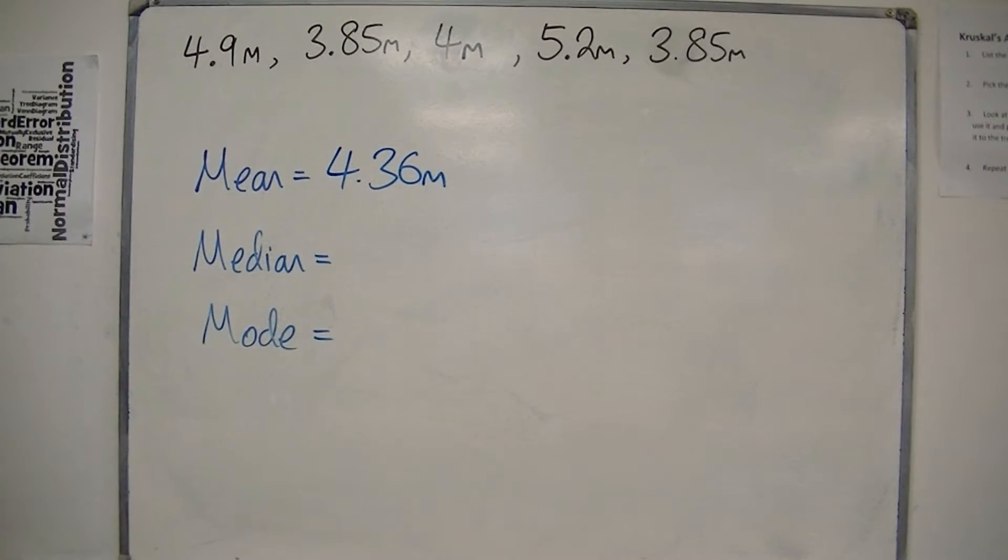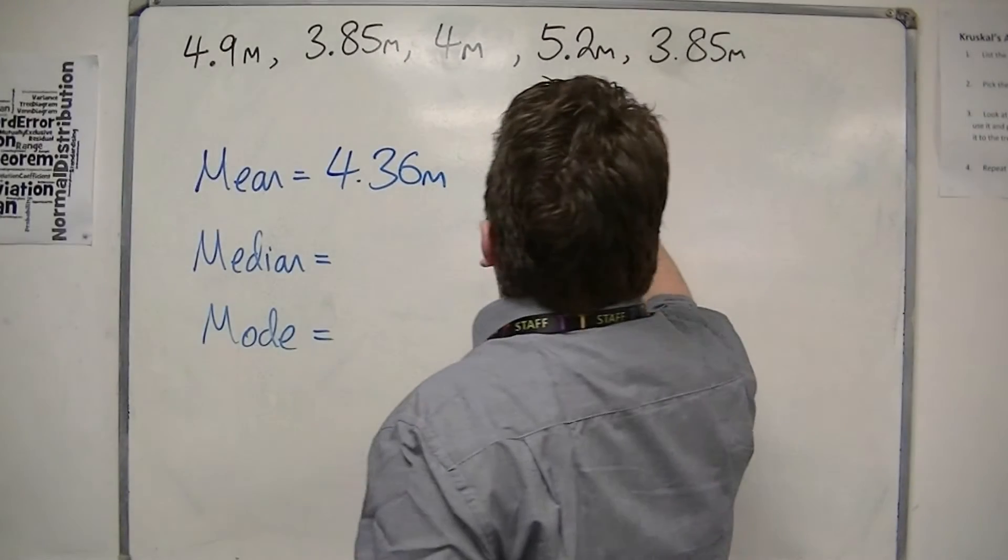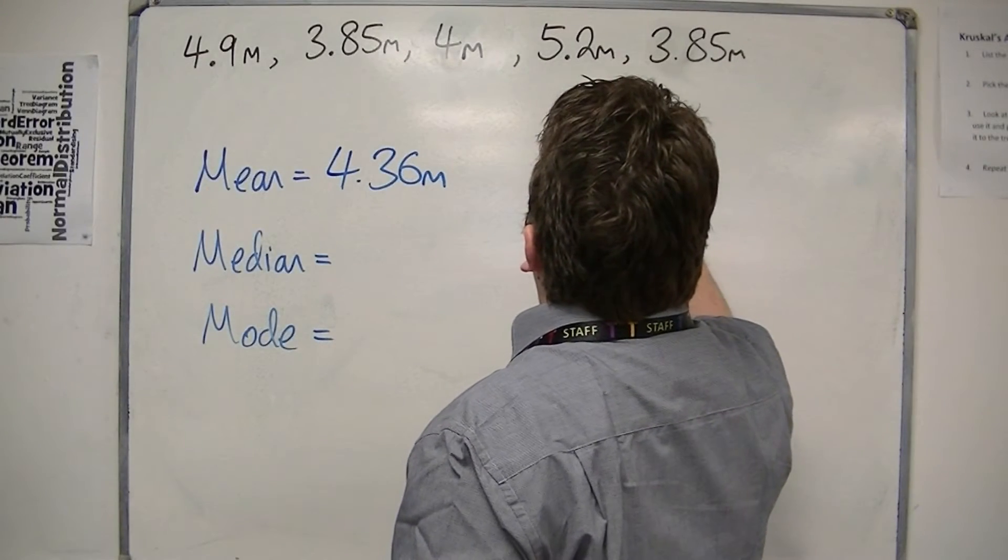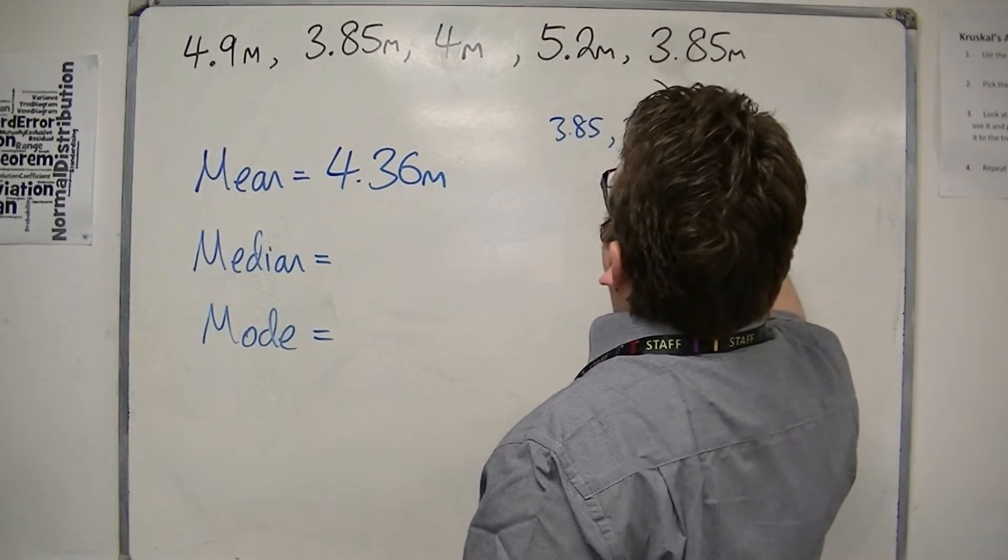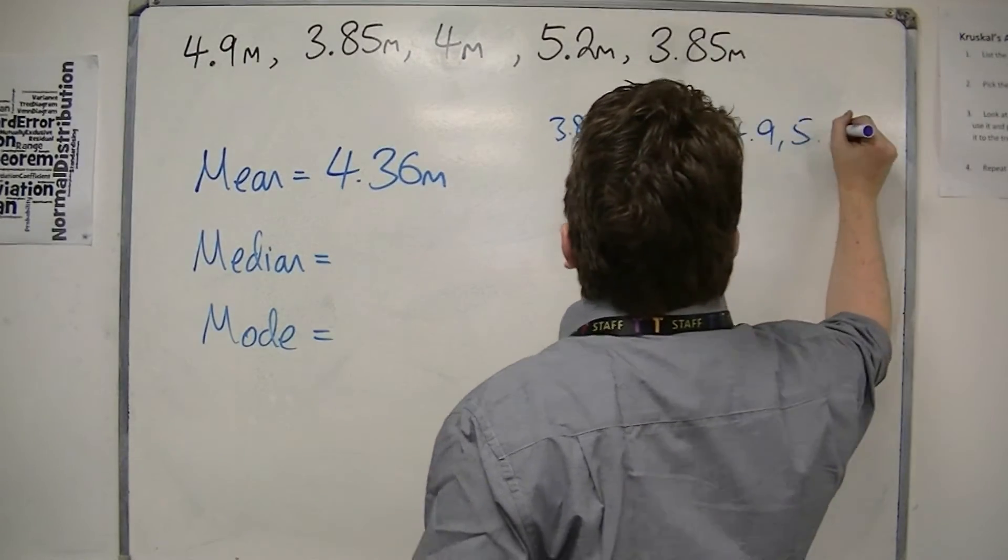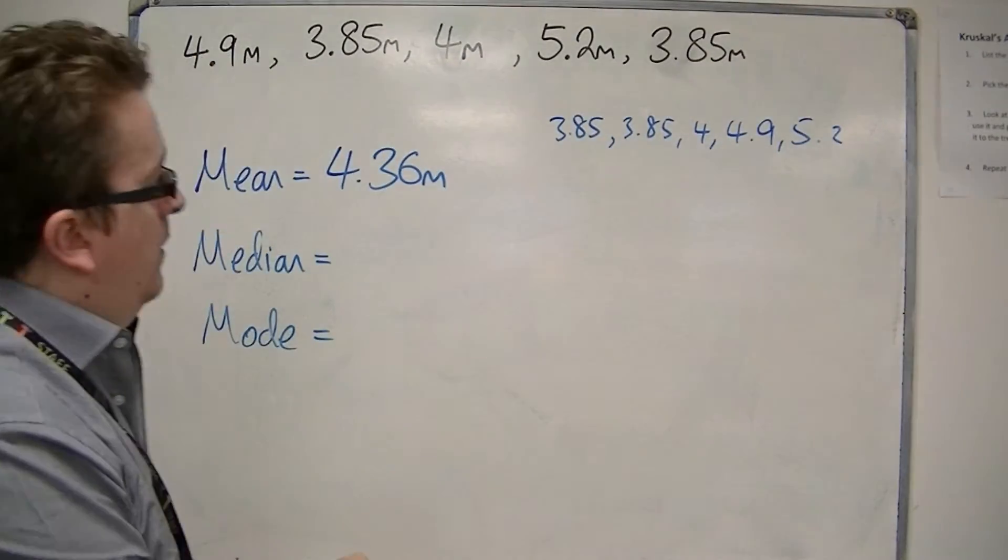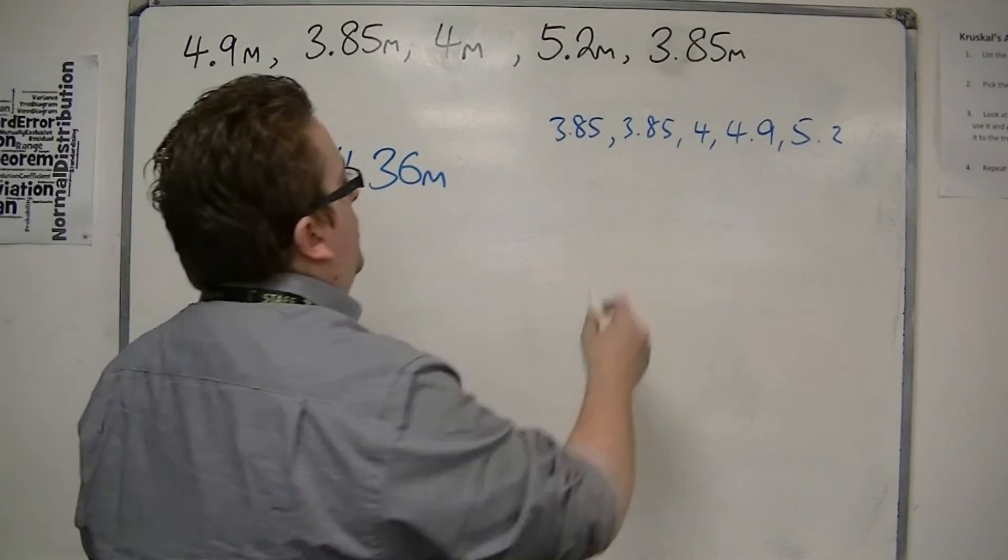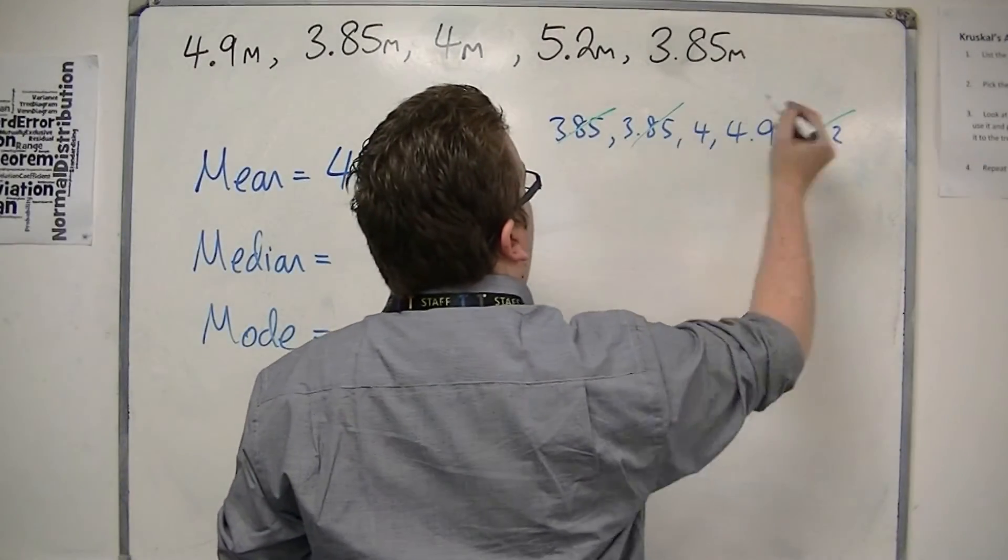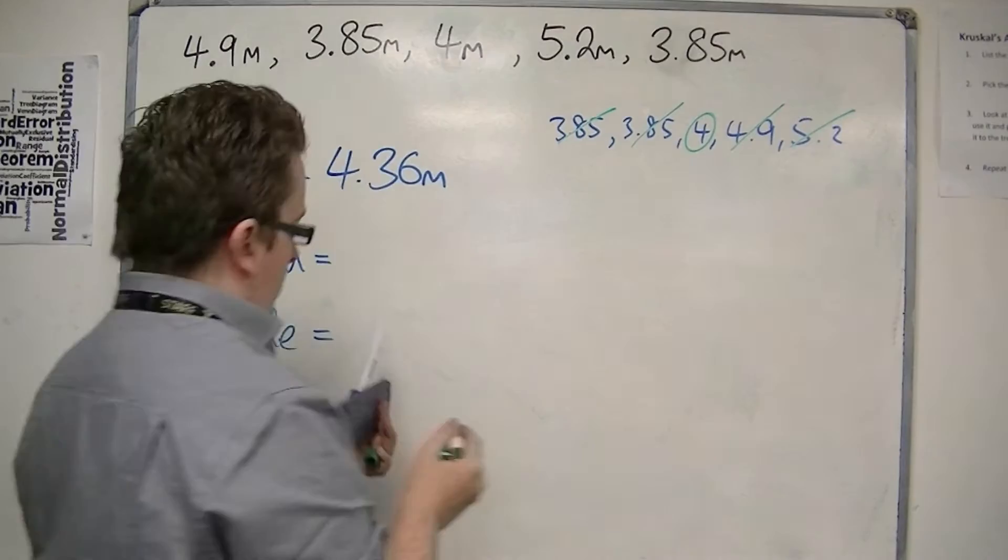Then the median, putting them in order, we have 3.85, 3.85, 4, 4.9, and 5.2. So crossing them off from both ends, the median is 4 metres.